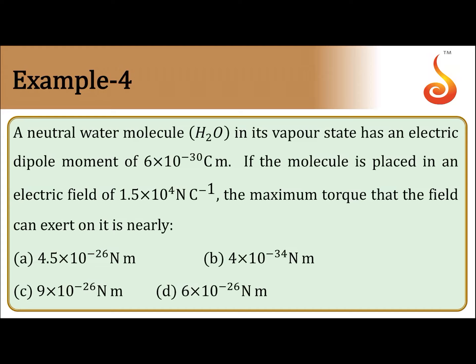Example number four. A neutral water molecule in its vapor state has electric dipole moment 6 into 10 to the power minus 30 coulomb meter.